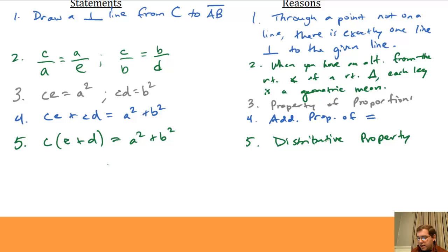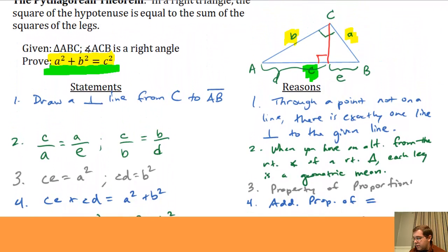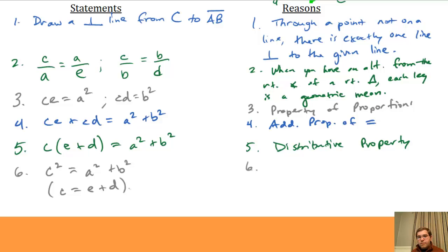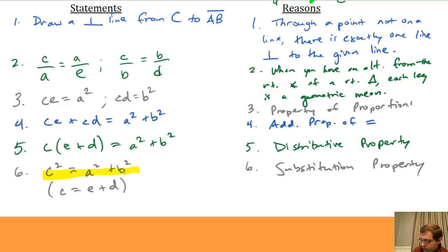When I distribute C back into the parentheses, I get CE plus CD. Then I notice that E plus D equals C — E and D were two pieces of the hypotenuse, so together they make the whole hypotenuse C. Since E plus D equals C, this becomes C times C, which is C squared, equals A squared plus B squared. Because I'm substituting C in for E plus D, this is the substitution property. And now I'm done — I have the equation of the Pythagorean Theorem: C squared equals A squared plus B squared.